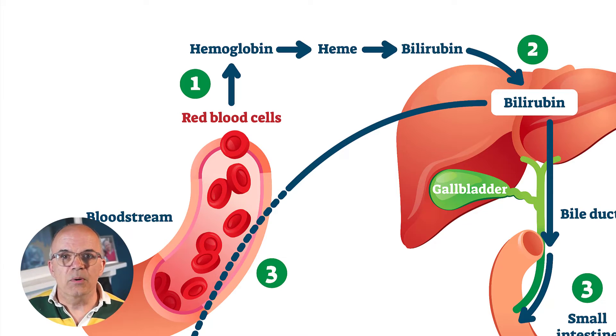The main constituent of red blood cells is hemoglobin, which is responsible for the transport of oxygen around the body. This is broken down into its constituent parts: heme and globin. The globin is a protein which is then broken down into amino acids and reused in the building of cells. The heme is broken down into unconjugated bilirubin and iron.